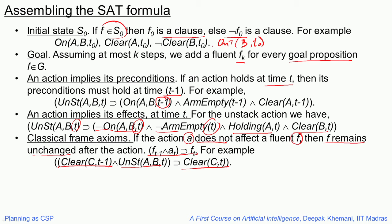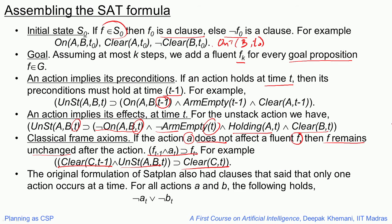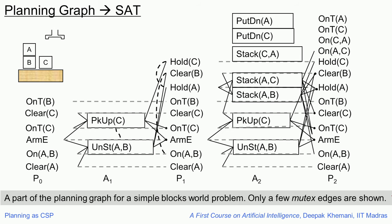You have to state this for every action and for every fluent. The good thing is that you do not have to do it manually — you can write a program to do this. The original formulation of SATplan by Kautz and Selman also had clauses stating that only one action occurs at a time, since you are looking for linear plans. This can be expressed as a constraint that for every pair of actions, at least one of them must be false — both can be false, but at least one must be.